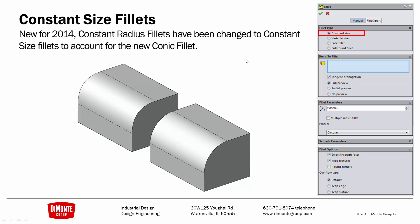The reason for the renaming is that SOLIDWORKS added a new type of fillet: the conic fillet. The profile of a fillet can now be changed. A standard radius fillet uses arcs to define the fillet, whereas the conic fillet tool uses conics to define the arc, and conics are sections of a cone.